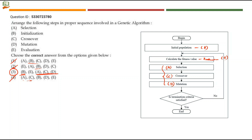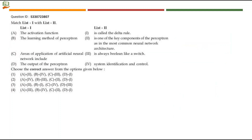Once all three steps are over, it goes to the termination criteria. It checks whether that criteria is satisfied — if yes, the algorithm ends; if not, it goes back to fitness value calculation. Note that evaluation is different from the termination condition.